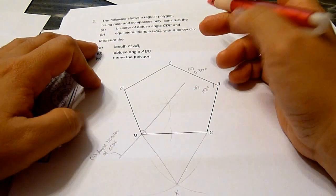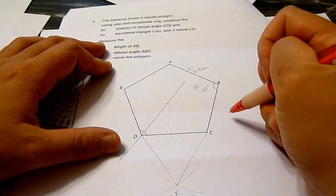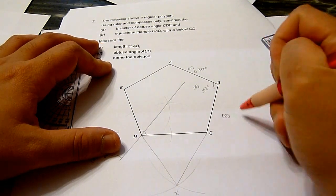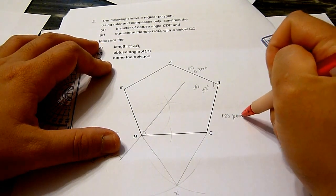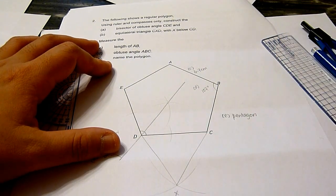To name this polygon, this is a five-sided regular polygon, and therefore it's known as a pentagon.